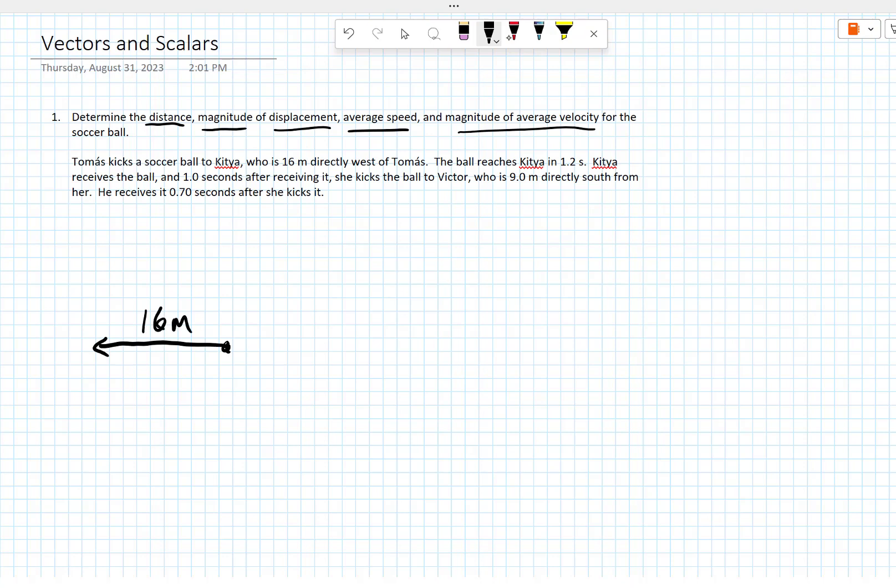That's my initial displacement vector for the ball. Then the ball reaches Kitya, waits there for a second, and she kicks it to Victor, who is 9 meters directly south. 9.0 meters directly south.